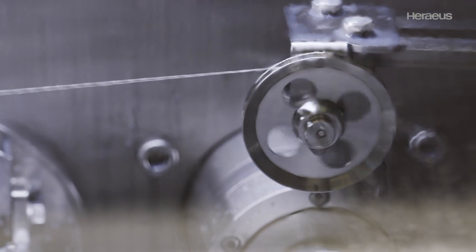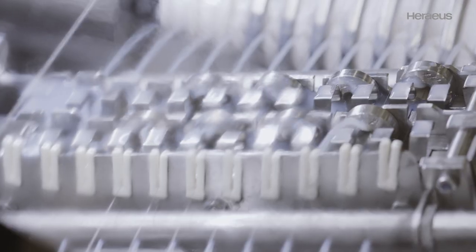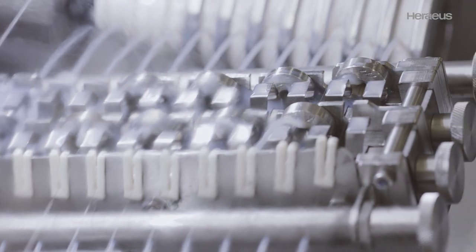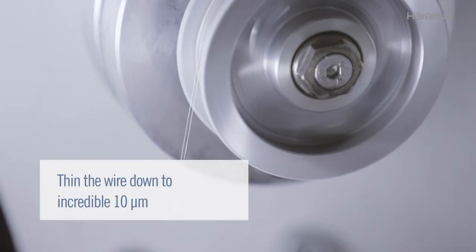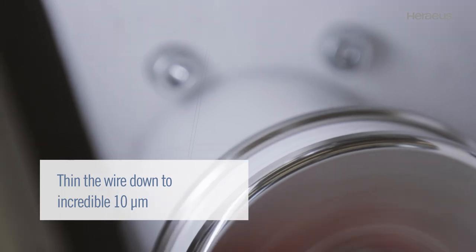In a multiple drawing system, several drawing dies are arranged in series. By doing this, it is possible to thin the wire down to an incredible 10 micrometers, less than a quarter of the thickness of a human hair.